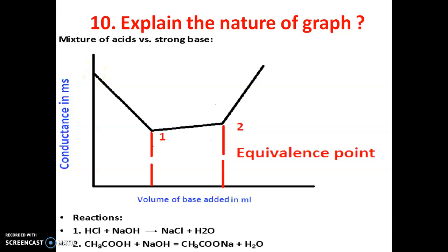After addition of NaOH, the fast-moving H⁺ ions are replaced by slow-moving Na⁺ ions. Therefore, the conductance decreases up to equivalence point 1. At equivalence point 1, complete formation of NaCl takes place.